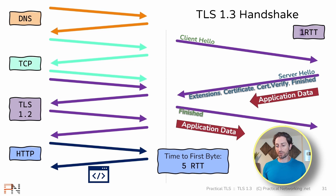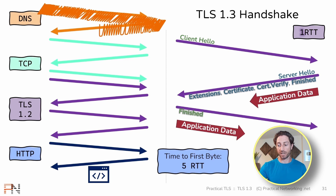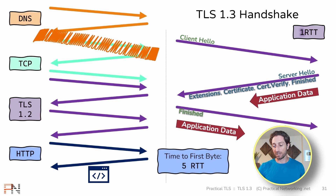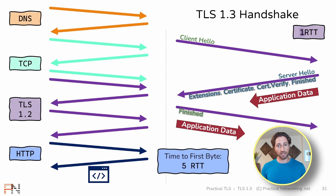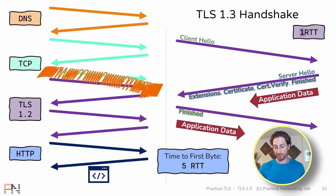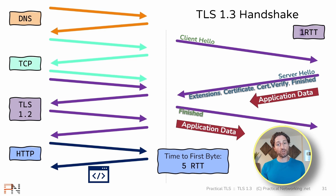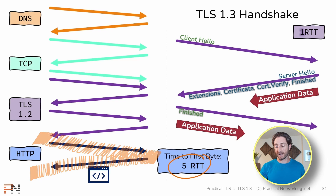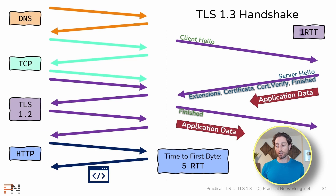Let me count out each of those round trips. The first is the DNS exchange. The second is the first part of the TCP handshake. For the third, both the ACK and the client hello are sent by the client nanoseconds apart, so the third round trip covers the rest of the TCP three-way handshake and the first part of the TLS 1.2 handshake. The fourth round trip is the second part of the TLS handshake, and the fifth is the HTTP request and response. That gives us five round trips for a typical web browsing session using TLS 1.2.